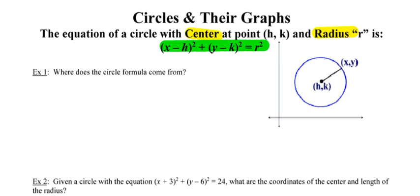If you're looking at that formula and thinking it reminds you of something you've seen before, you're not alone. When I see the first item squared plus the second item squared equals the radius squared, I think of a squared plus b squared equals c squared. The circle formula is a direct descendant of the Pythagorean theorem.